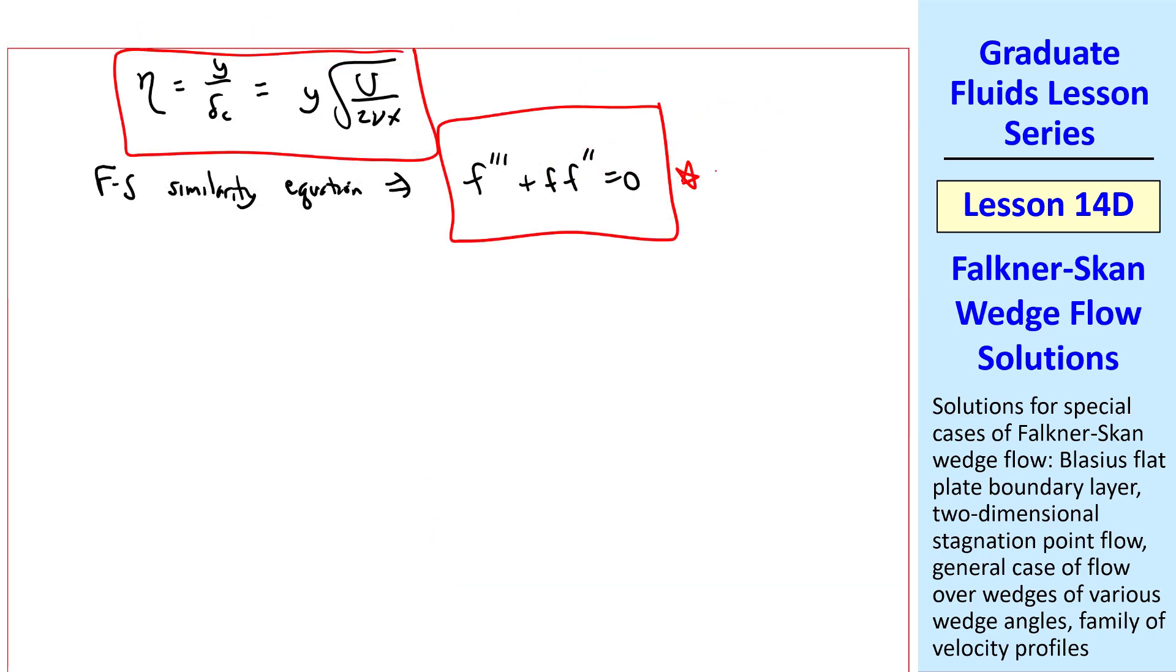Astute students will recognize that this is the same as the Blasius equation. So the solution is identical, and we've already done it. The only difference is this factor of 2 here. That's because the arbitrary constant c is 1 here, instead of one half, that we used in our previous Blasius case. But everything else is identical. So beta equals zero, in the Falkner-Skan similarity equation, represents the Blasius flat plate boundary layer. And this is the first in our family of solutions.